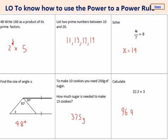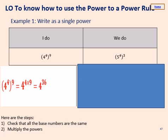Today we're learning how to use the power to a power rule — our next law of indices. We've got four to the power four in brackets, and that's all raised to the power of nine. The trick here is that we multiply the power inside the bracket by the one outside. So four to the power four, raised to the power nine, equals four to the power of four times nine, which gives four to the power of 36.